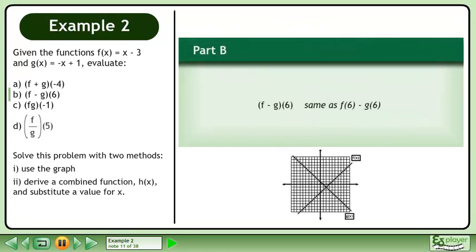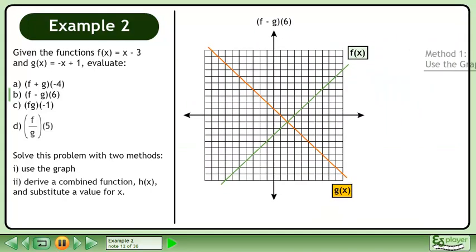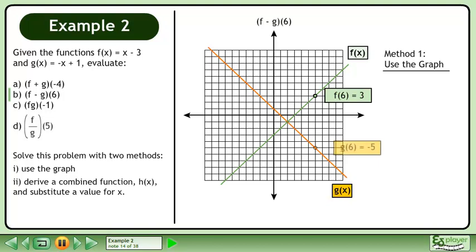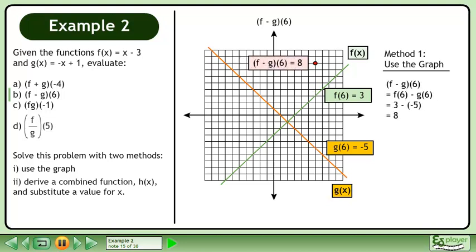In part b, we'll evaluate f minus g at 6. First, we'll solve this problem using the graph. f at 6 equals 3. Draw a point on the graph of f at 6, 3. g at 6 equals negative 5. Draw a point on the graph of g at 6, negative 5. Subtract the y values to get 8. The notation reads: f minus g at 6 equals 8.